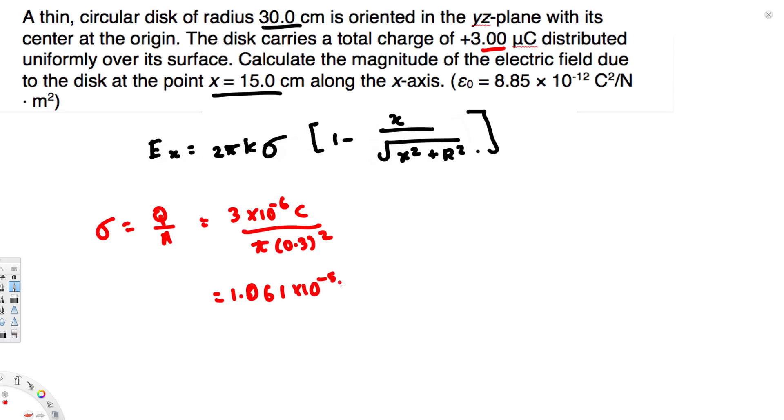If you calculate this, you get 1.061 × 10⁻⁵ coulombs per meter squared. So this is our charge density. Now we can plug it into the equation to find our final answer. Therefore, E(x)